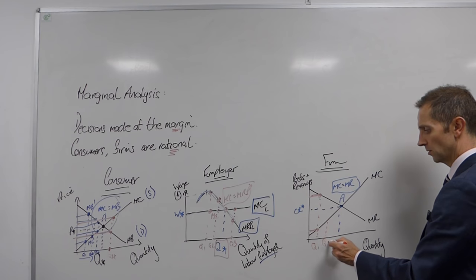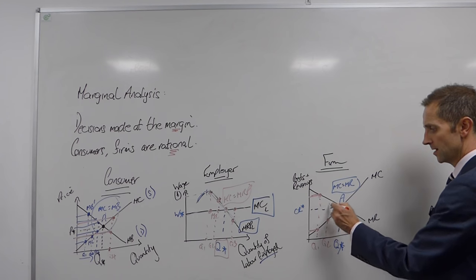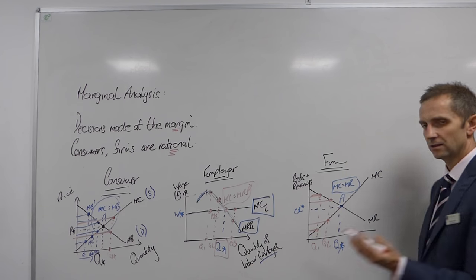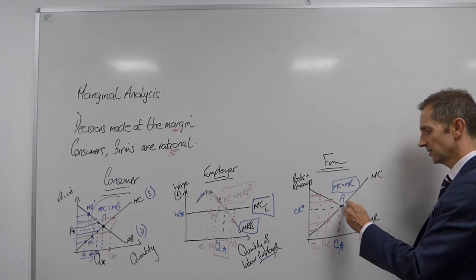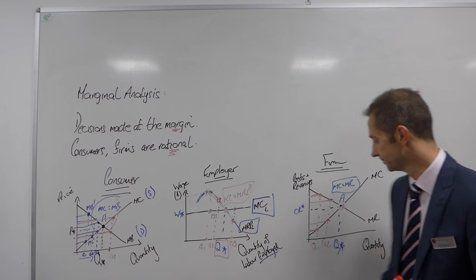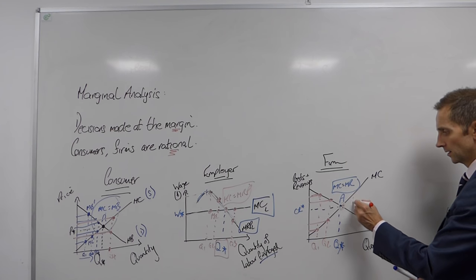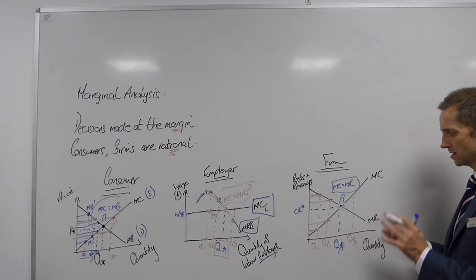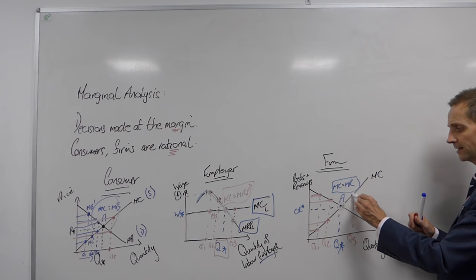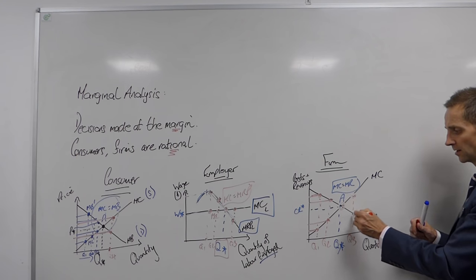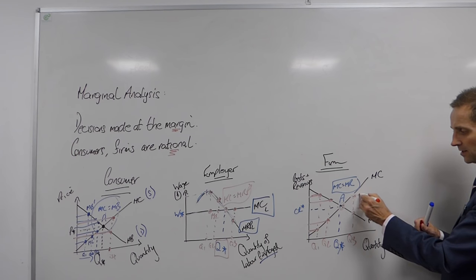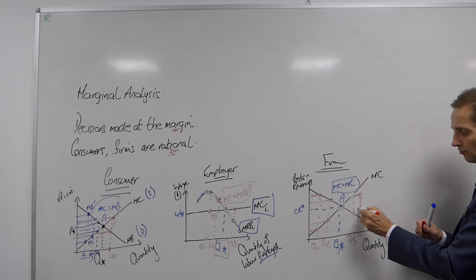What about the next unit, Q2? Again, similar. Big differential between the revenue and the cost. Supply it. And again, so the same is the case all the way up to point A. Now if we go beyond that point, Q3 for example, then we're hitting the scenario where, from the firm's point of view, supplying that extra unit costs them this amount, but the extra revenue generated by that only brings in that. So cost is here, revenue is here.